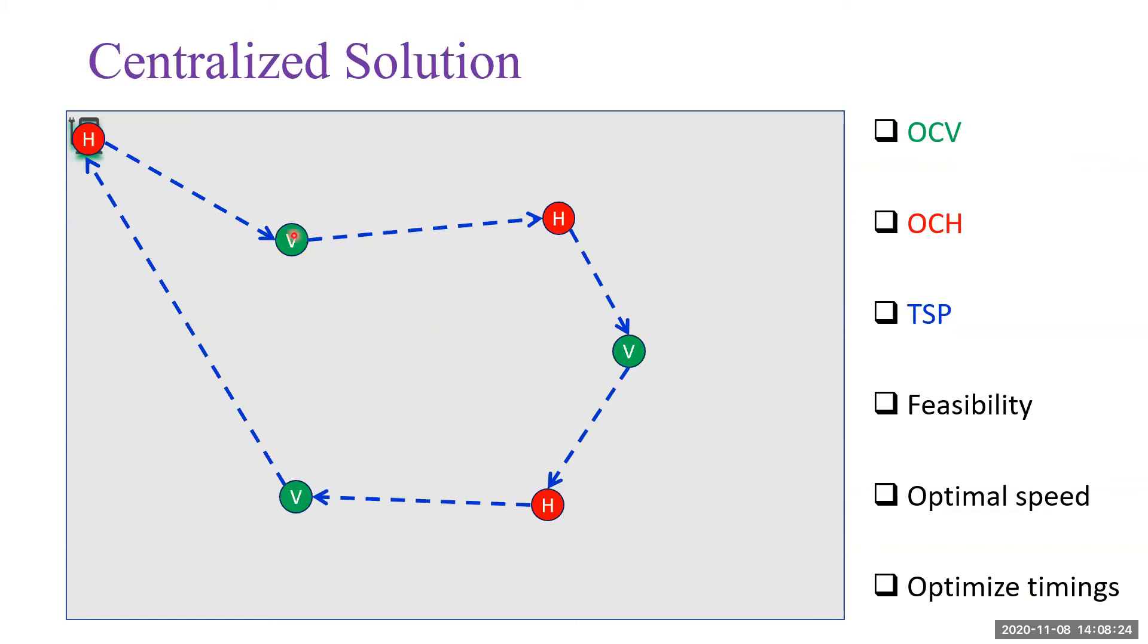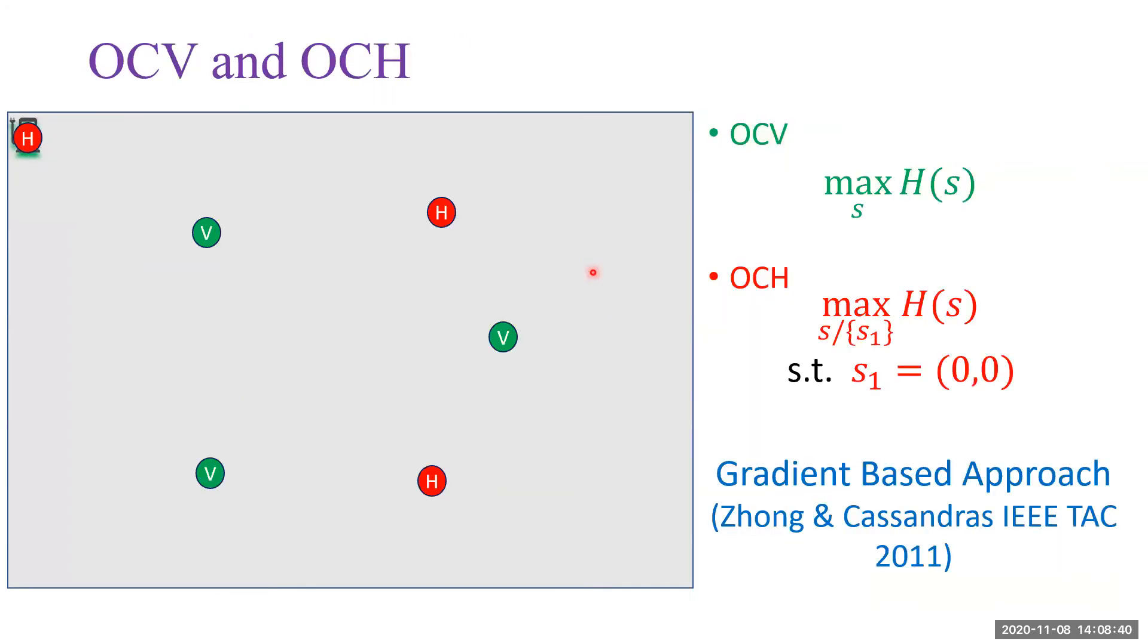That's the optimal dwelling time for agents to stay at each location. We find the optimal coverage location and optimal charging locations. They are basically the static coverage problem. To solve this problem, we can use the gradient-based approach.